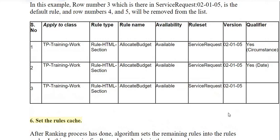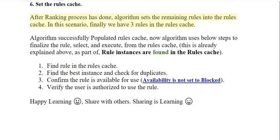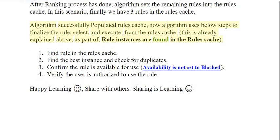Step 6: Set the rules cache. After the ranking process is complete, the algorithm sets the remaining rules into the rules cache. In this scenario, we finally have three rules in the rules cache. The algorithm has successfully populated the rules cache. Now the algorithm uses the following steps to finalize, select, and execute the rule from the rules cache — these steps are the same as explained for when rule instances are found in the rules cache: 1) find the rule in the rules cache; 2) find the best instance and check for duplicates; 3) confirm the rule is available for use, availability is not set to blocked; 4) verify the user is authorized to use the rule.